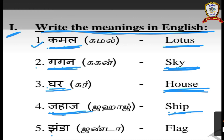Fifth one: Janda — J-A-N-D-A. Janda means flag — F-L-A-G, flag. Once again children, listen carefully: Kamal means lotus. Gagan means sky. Ghar means house. Jahaj means ship. Janda means flag — F-L-A-G, flag.